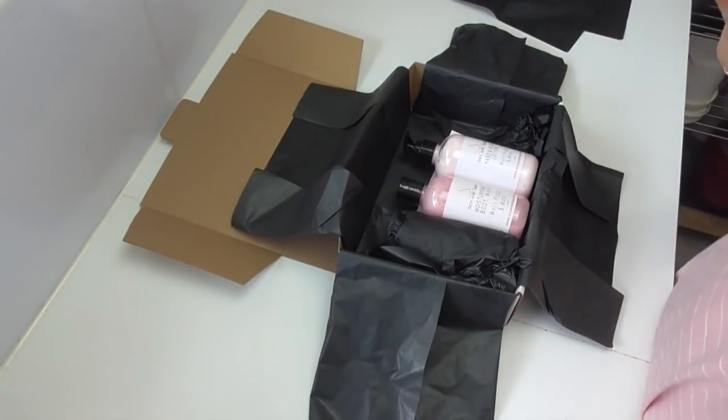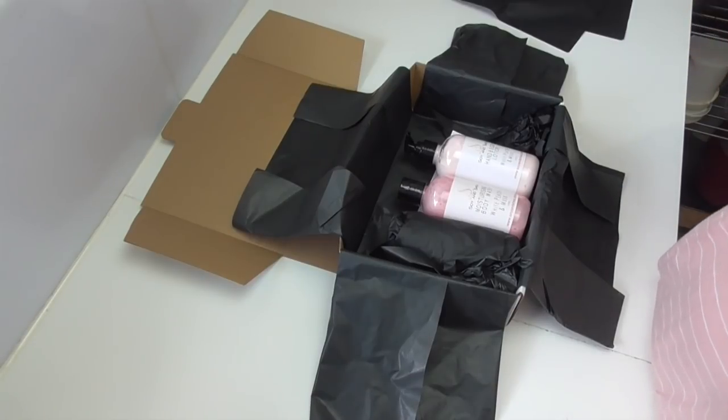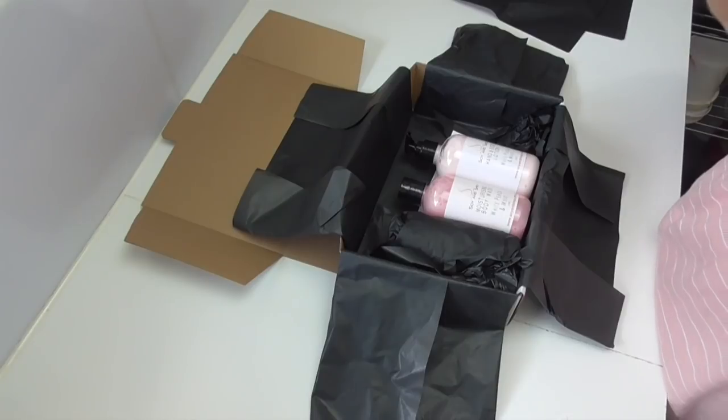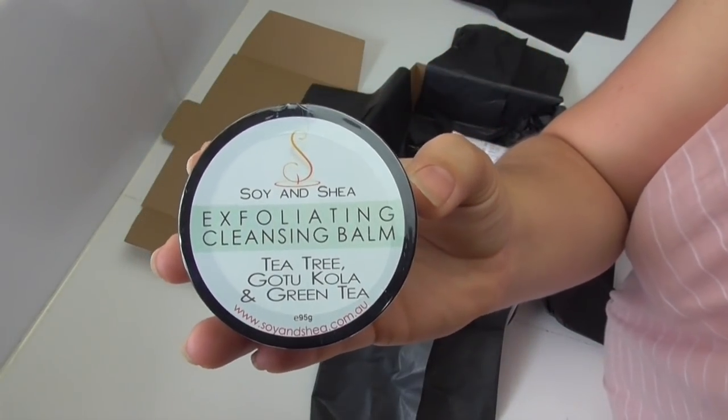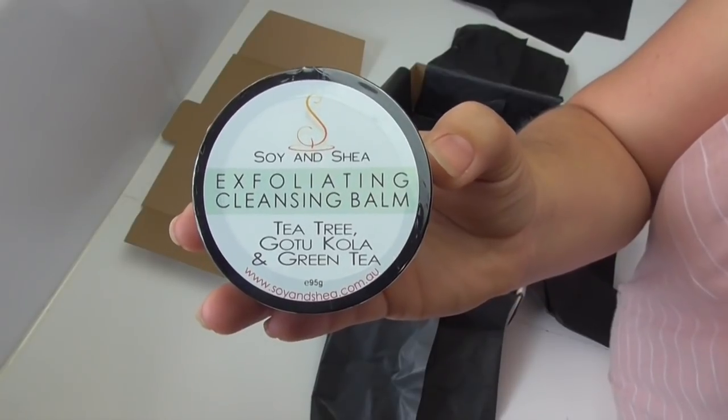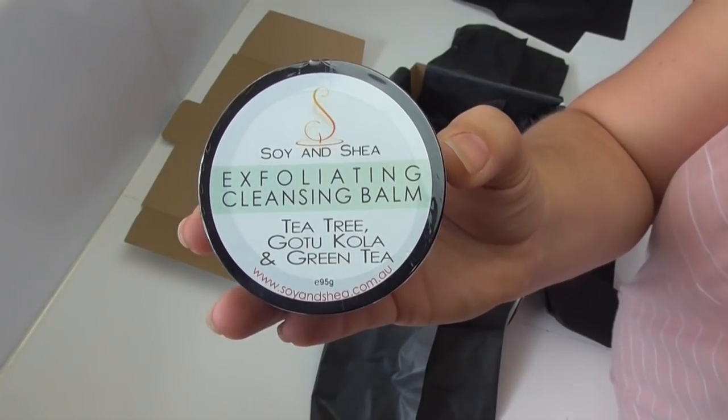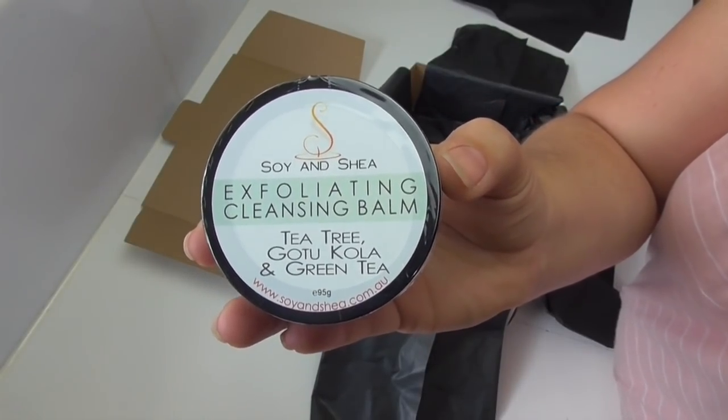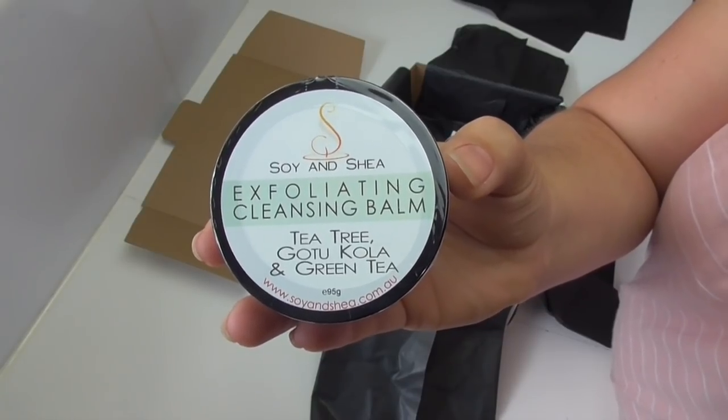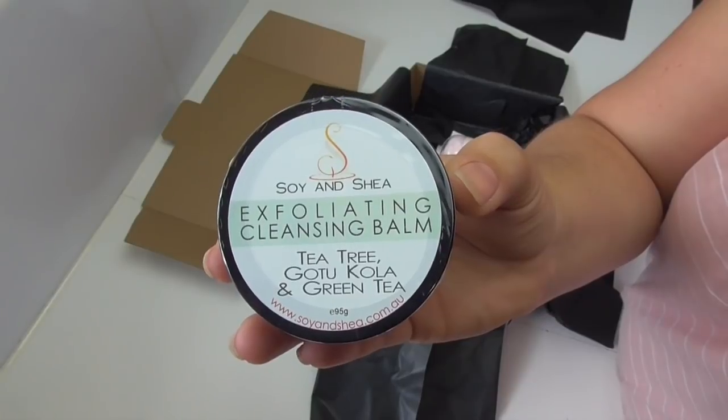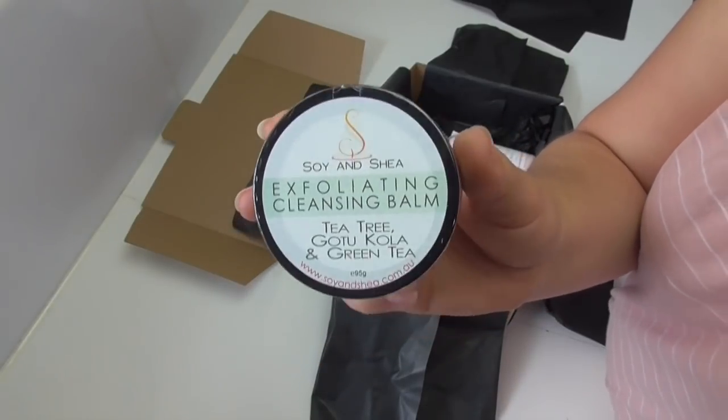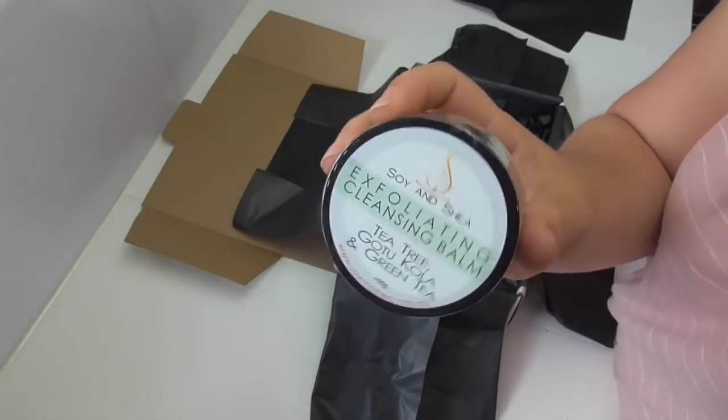We get a lot of requests to do a facial cleanser, and we have been working on them throughout the year, and we're really pleased to announce that in January 2019 we'll be bringing out our exfoliating cleansing balm. It's made with oils such as jojoba, hemp seed, evening primrose, and castor oil, and it includes other additives such as zinc oxide, vitamin B3, and vitamin E. It's a little mini facial in a pot, basically.